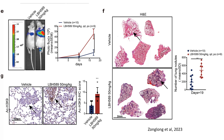This slide highlights how treatment with HDAC inhibitor LBH589 impacts breast cancer metastasis using in vivo mouse models and lung tissue analysis, focusing on three key panels: bioluminescence imaging, lung histology, and immunohistochemistry. Panel E shows bioluminescence imaging of nude mice injected with breast cancer cells and treated with either a vehicle control or LBH589. You can see a dramatic increase in luminescence in the LBH589-treated mice, indicating enhanced metastatic progression. The accompanying graph quantifies photon flux over 19 days, with LBH589-treated mice displaying significantly higher levels compared to the control group.